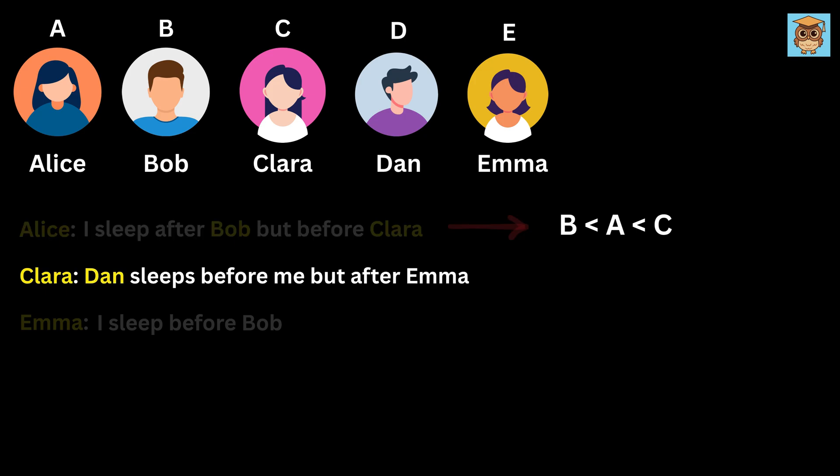Now Clara says, Dan sleeps before me but after Emma. This means the order includes Emma, then Dan, and then Clara, or E, D, and C.